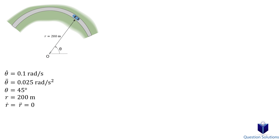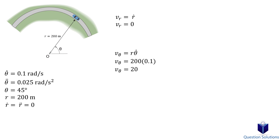Now we can focus on the magnitude of velocity. Using the radial component equation, since r is a constant its first time derivative is zero, so the radial component of velocity is zero. Next, we find the transverse component by plugging in the values we know and solving. Then we find the magnitude of velocity by substituting those values, giving us the magnitude of velocity.